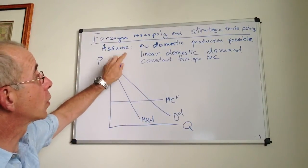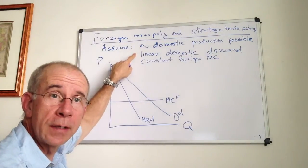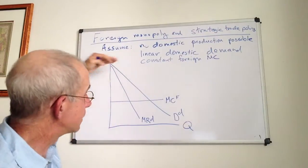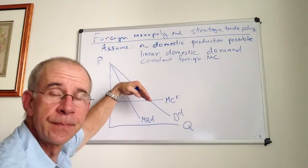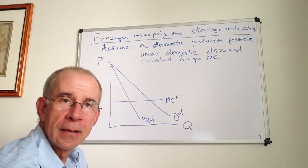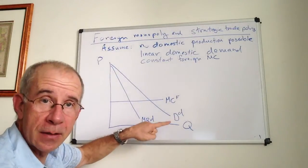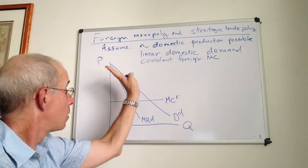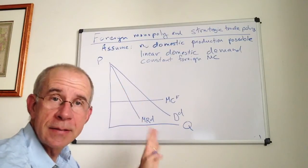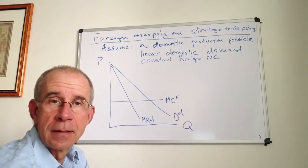And we're going to make a couple of other important assumptions here. One is that domestic demand is linear, that is, it's a straight line. The importance of that will become clearer in this and also a subsequent video. One aspect of a domestic demand curve being linear is that marginal revenue is going to be twice as steep as the domestic demand curve.